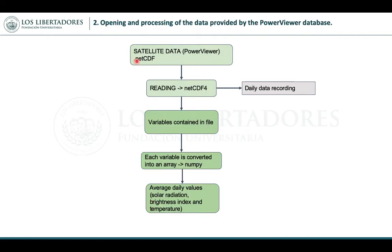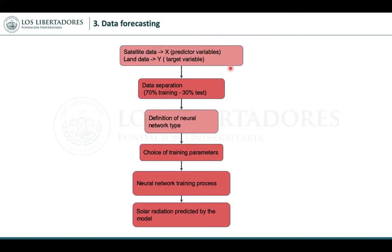The second stage is the opening and processing of NASA Power data. This information is contained in a NetCDF file, and we used the NetCDF Python library. This metadata contains different climatic variables in a single file. Each variable is converted into a NumPy array. This stage gives us average daily values for solar radiation, UVI index, and temperature.